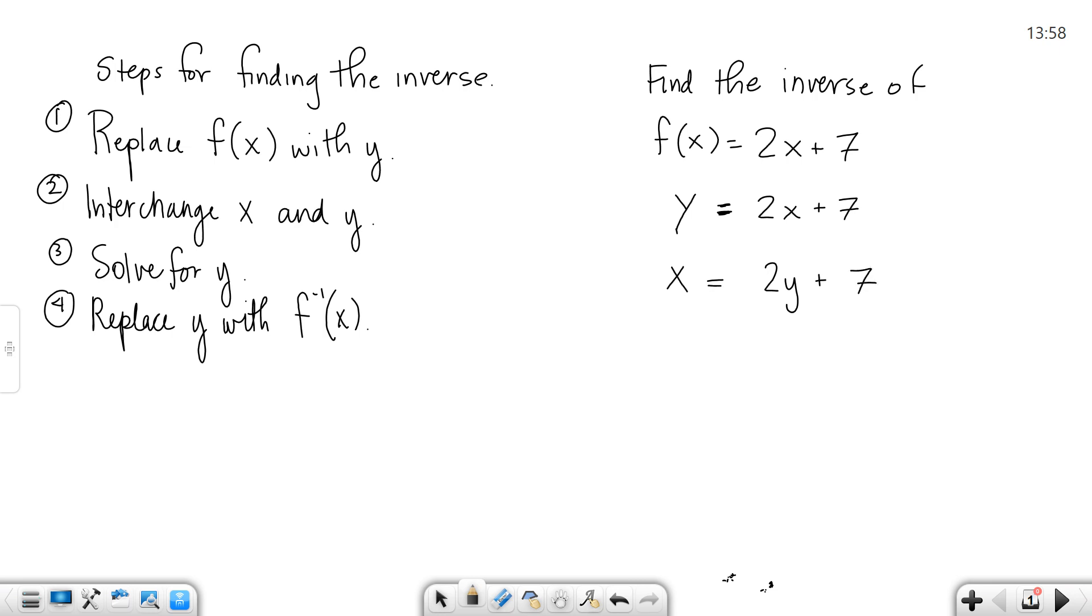Now you're going to solve for y, so we're going to get y by itself. In order to get y by itself, I'm going to move the 7 and then move the 2. So I'm going to subtract 7. So x minus 7 would equal 2y.